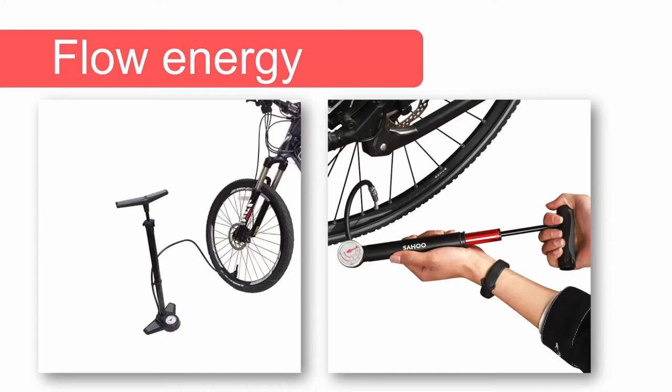When we inflate the tire of a bicycle, we need to pressurize the air in the pump in order to force it to flow through the connecting tube into the tire. We perform work when pressurizing the air. If we assume the pressure inside the pump stays constant, the work necessary to force the air into the tube is equal to the pressure inside the pump multiplied by the volume of air that flows into the tire. Work is a form of energy, and this energy is called flow energy.